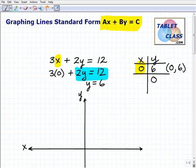So when x is 0, so here's 0, y is 6. 1, 2, 3, 4, 5, 6. Right here is the point 0, 6. All right, but we have one point that's on that line. We need 2.